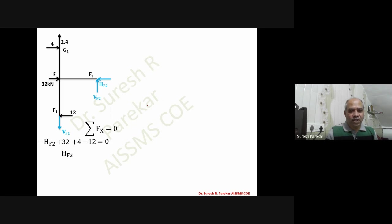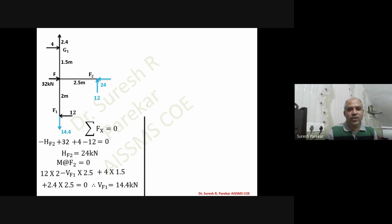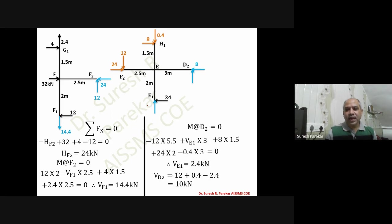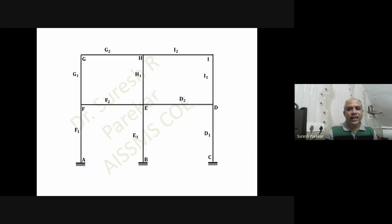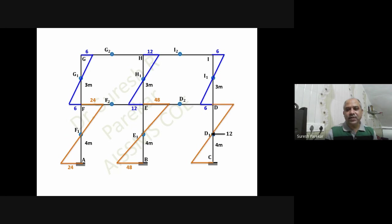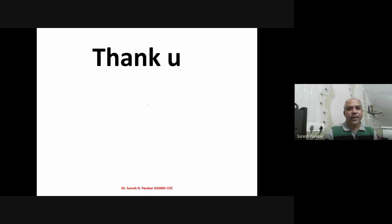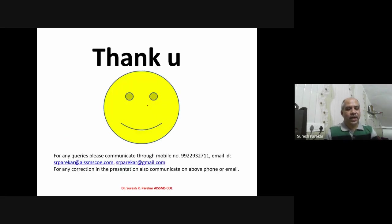For joint F, solving the three unknowns gives all values. Joint E is solved similarly. For joint D, known values — 10 plus 2 equals 12 — are used with equilibrium equations. Multiplying the column shear by the half-height distance gives the bending moment for each column. For beams, multiplying 2.4 by the respective distances gives the beam moments. This completes all the bending moment diagrams. These are the problems asked in the last several university examination papers on the portal method. Thank you.